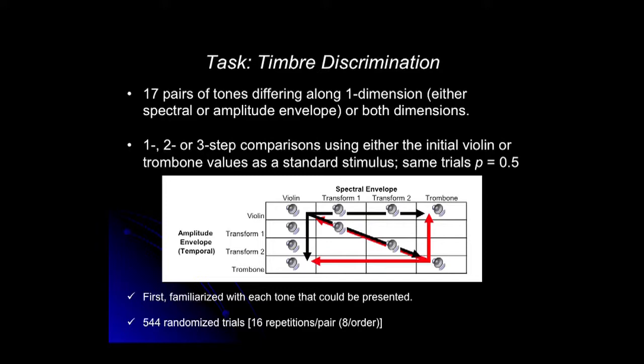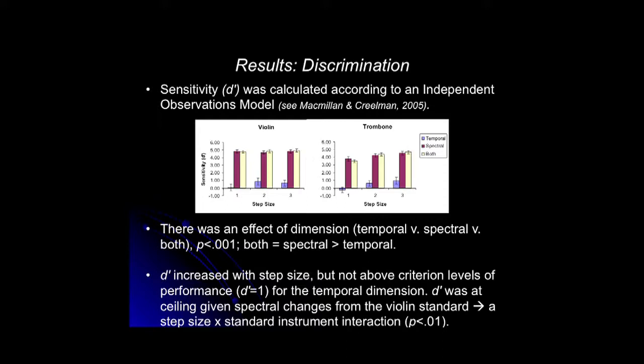We also did a discrimination task, varying what listeners compared with one of the standards by one, two, or three steps along either the spectral envelope dimension, the rise time dimension, or the diagonal where both dimensions vary simultaneously. Here's what discrimination performance looked like. The red and yellow represent conditions where the spectral dimension — the envelope shape including formants — could contribute. The measure is D-prime: a theoretically bias-free measure of sensitivity used by psychophysicists. Higher D-prime means better discrimination. At about 4.65, that's essentially perfect performance.